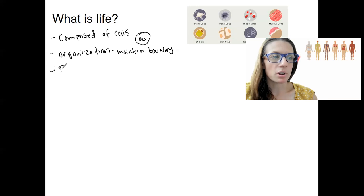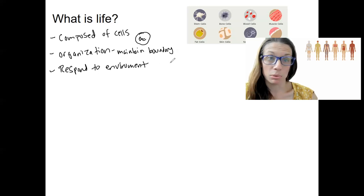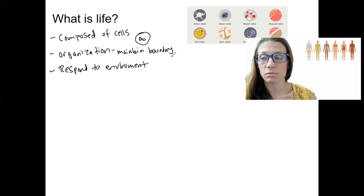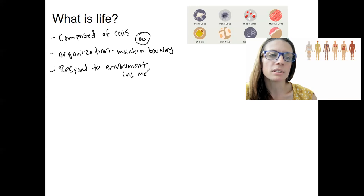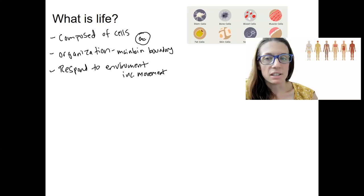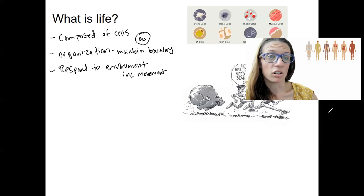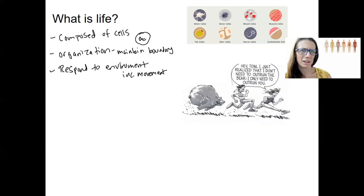Number three, respond to the environment. This could be pretty simple in terms of what a bacteria might need to do, but it would still do it. Sensing something in the environment and responding appropriately to that thing, hopefully. This also is going to include things like movement for organisms that can move. So responding to the environment is going to involve our nervous system.